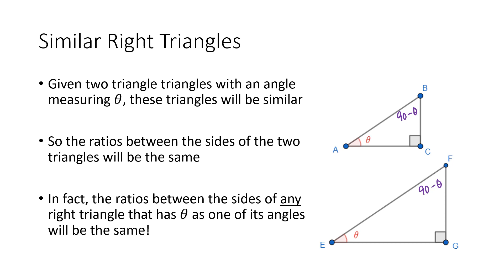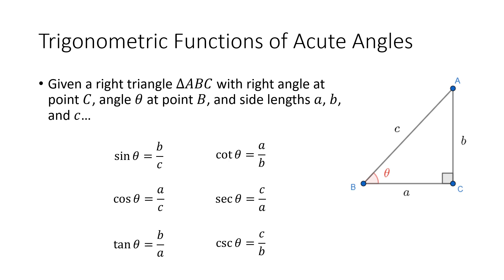In these two triangles, because we've got one angle measuring 90 degrees and the other angle measuring theta, the actual distances themselves will not be the same, but what will be the same is the ratios between the lengths of the triangles — and we call those ratios trigonometric functions. There are six ways to form ratios between two out of the three sides of this triangle, so there are six different trigonometric functions.